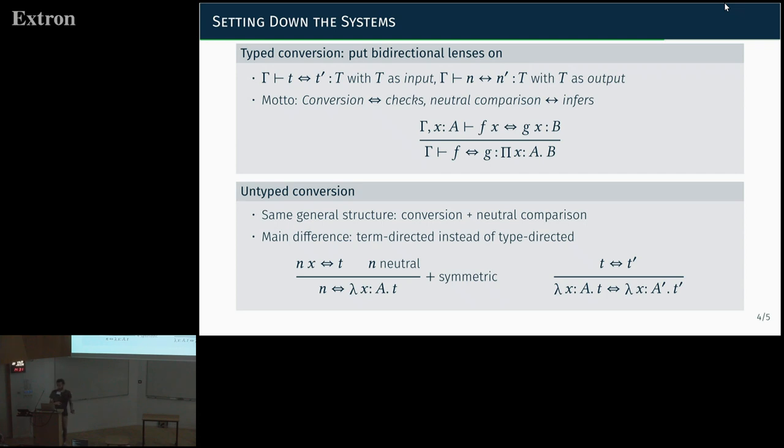On the other hand, you can design the untyped conversion. That's what I've been doing, which follows the same general structure. You also have a separation between conversion and neutral comparison that's set as a subroutine. The main difference is now you can't use the types as your input because you're not maintaining them. So instead, you have to have some form of term-directed rules, and you can do that actually. That all dates back to work of Thierry Coquand. That shows that you can have rules that just look at one of the two sides and say, if I have a lambda, then I can eta expand the thing that's compared with a lambda. If I have two lambdas, I can just use a congruence rule that's as good as using eta expansion.